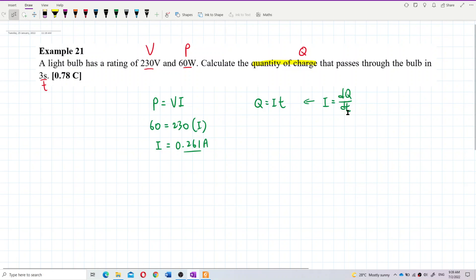So dt multiplied to the top, or we can also write it as the total charge passing through over time taken. When we multiply time to the top, we have the formula Q equals It. We already got the current, so we can get the charge flow in three seconds.